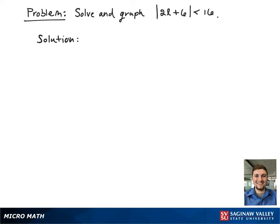Here we have the absolute value inequality. The absolute value of 2L plus 6 is less than 16. This means we can rewrite it as negative 16 is less than 2L plus 6 is less than positive 16.